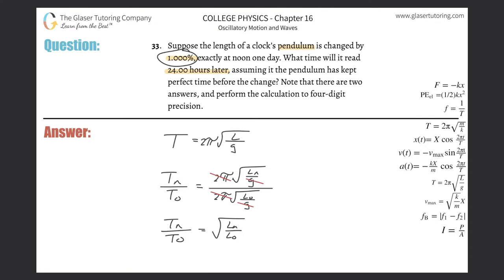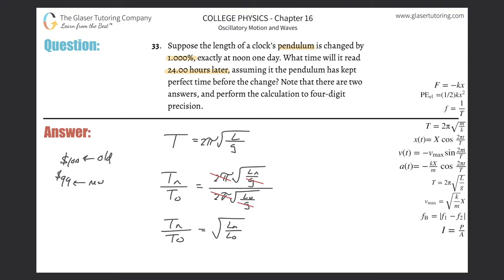It says the pendulum's length is changed by 1%. What does that mean? Pretend I told you you have an item that costs $100 and you're going to get 1% off — you're going to pay $99 for that item. So the new value is basically going to be 99% of the old value. If I discounted the $100 by 1%, I'm left with $99. In other words, the final value was 99% of the initial value. That's the important relationship we need to consider.